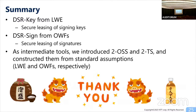We have time for questions. A question was raised about whether publicly verifiable deletion is achievable. If we require public verifiability, that seems to imply public-key quantum money, and the only known construction of public-key quantum money from any assumption uses indistinguishability obfuscation (iO). So we would need to rely on iO to achieve public verifiability.